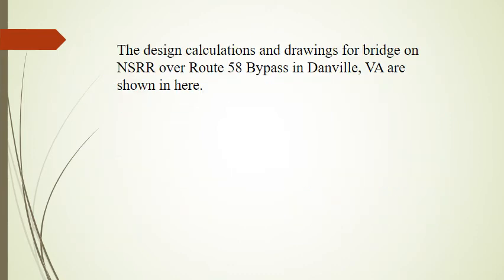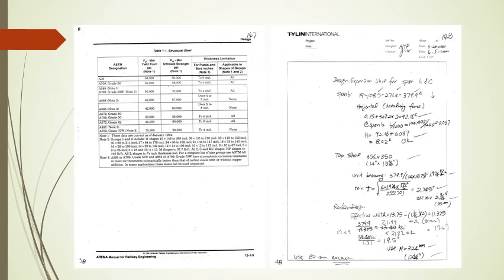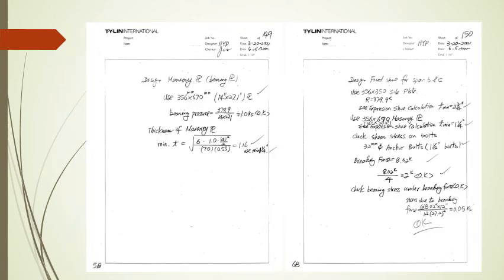The design calculations and drawings for the bridge on NSRR over Route 58 Bypass in Danville, Virginia are shown here. These are the calculation sheets, including the last two calculation sheets.